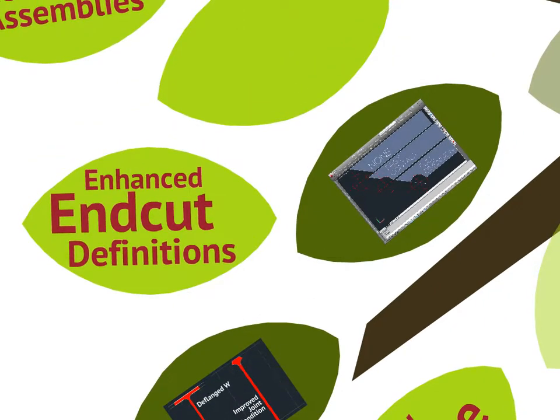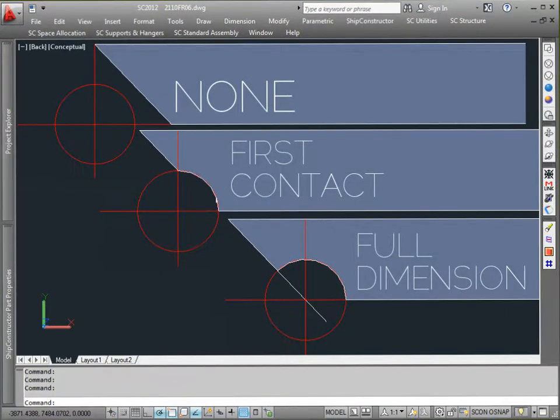Enhanced end-cut definitions: if you had end-cut definitions previously applied to stiffeners that had trims on them, the old way would not have shown the cutout for that end-cut condition because the trim would have obscured it. But now we have great new options — we can say go to the first point of contact for that radius. Regardless of whatever that trim dimension is, when you take that cutout radius definition and slide it back until they reach a first contact location. Or the full dimension, meaning apply it at the root of wherever that stiffener happens to be.